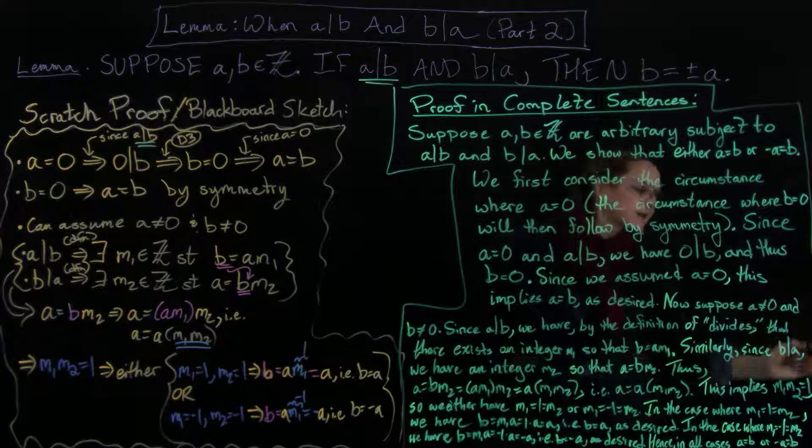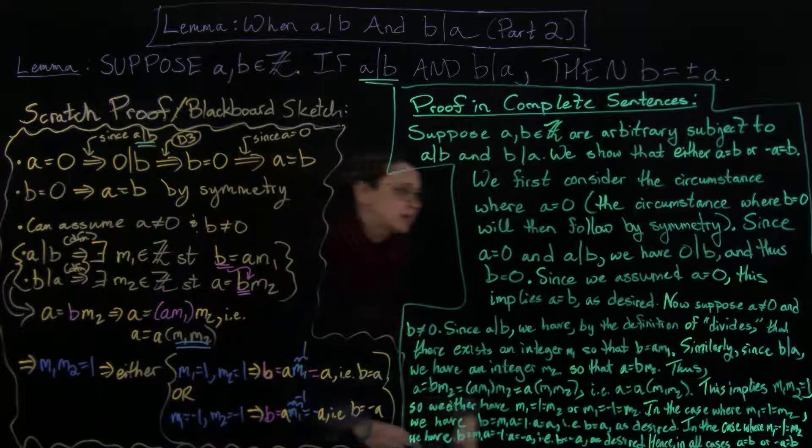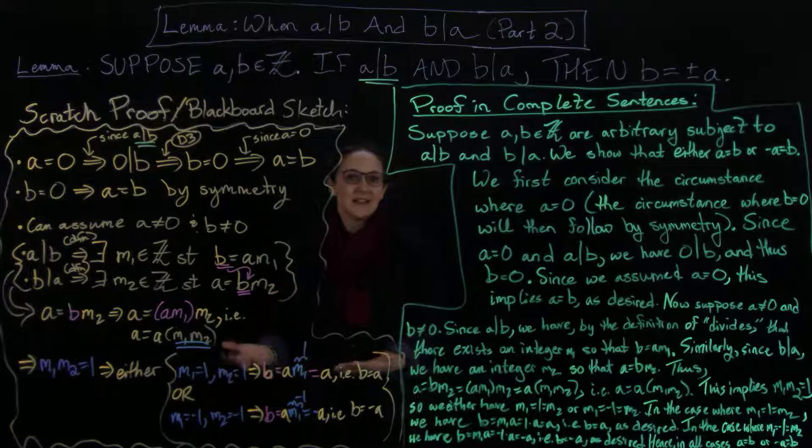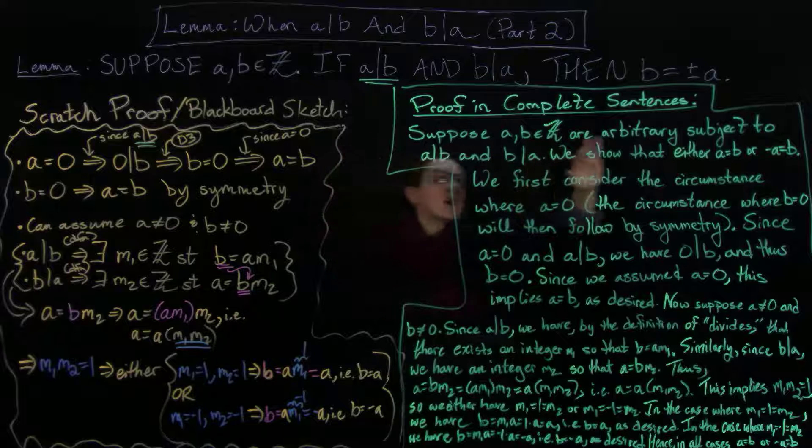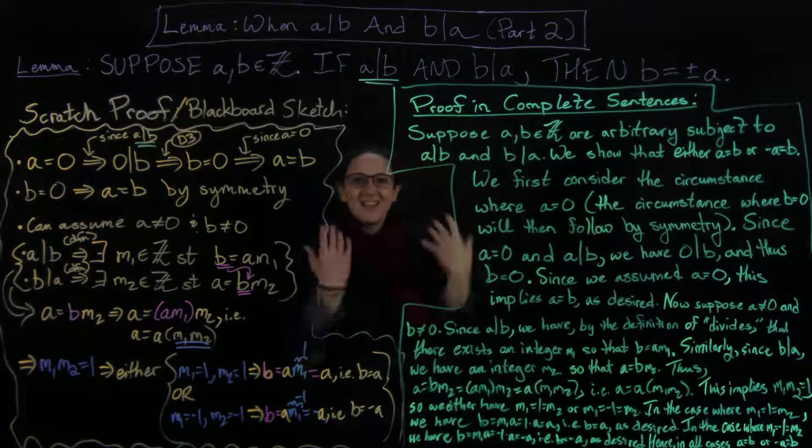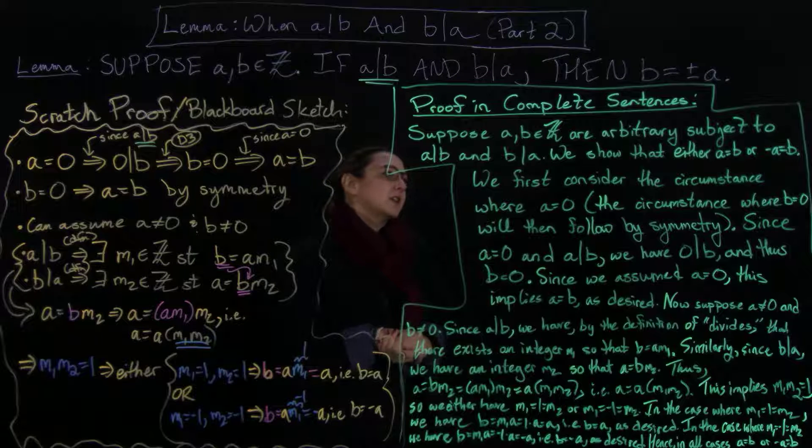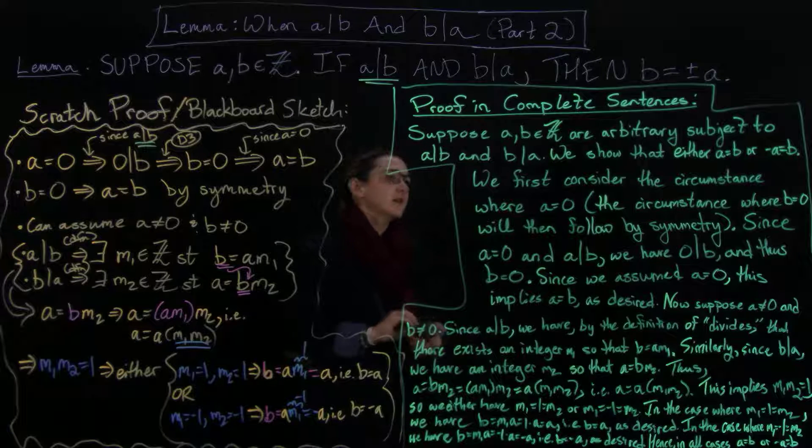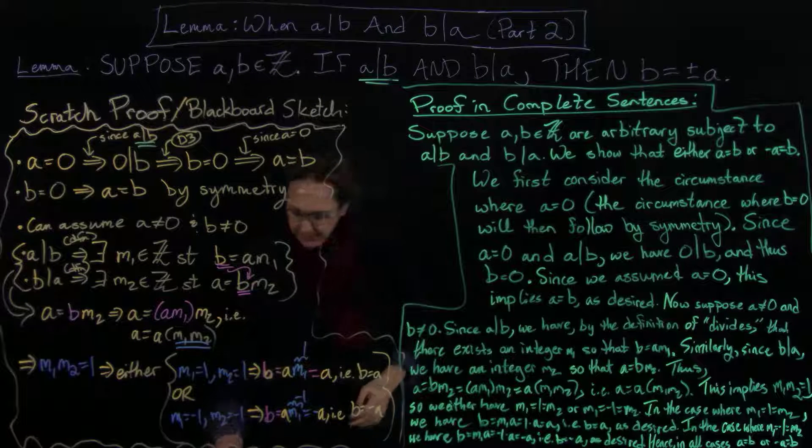It was hard to get this whole proof on the same board, so there were some kinds of spacing things that I left out that I might otherwise do, such as actually list my cases. But this really has all the things that we had. I start out with my suppositions. This is kind of typical language: they're arbitrary subject to A divides B and B divides A. It's nice to say what you're going to show. It's nice to your reader. It also helps you to make sure that you showed what you meant to show. And then you can first consider this circumstance where A equals zero, and you can tell us at this point that the other one's going to follow by symmetry, so you're not going to actually need to cover that one.